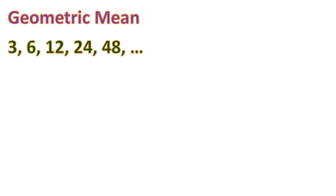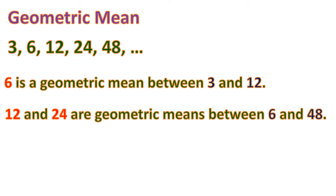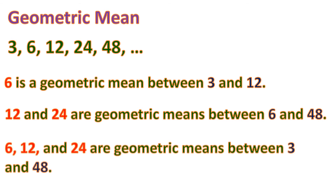Now let's talk about geometric mean. The geometric means of a sequence are the numbers in between the terms of a geometric sequence. For example, 6 is a geometric mean between 3 and 12 because it falls between them. Also, 12 and 24 are geometric means between 6 and 48. Any numbers can be geometric means as long as they are between two terms from the geometric sequence.